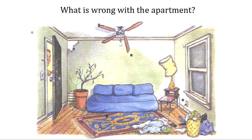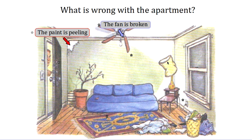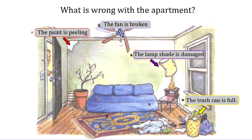The paint, right? And we can say that the paint is peeling. What about this fan? Definitely not correct. I could say that the fan is broken. And this thing here — this is called the lampshade — and I could say that the lampshade is damaged. The trash can — what's wrong with the trash can? Well, the trash can is full, very full actually. And the clothes on the ground — the clothes are on the floor. And the last thing I am going to look at is the plant. I am going to say the plant is dry.